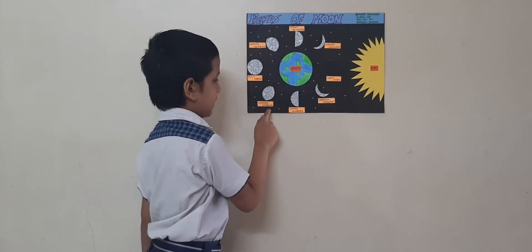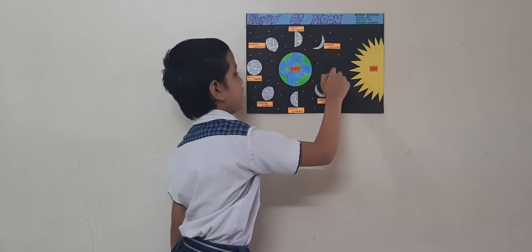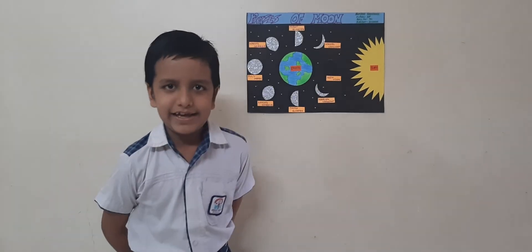You can see here: waning gibbous, third quarter, waning crescent, and then finally a new moon appears. Thank you.